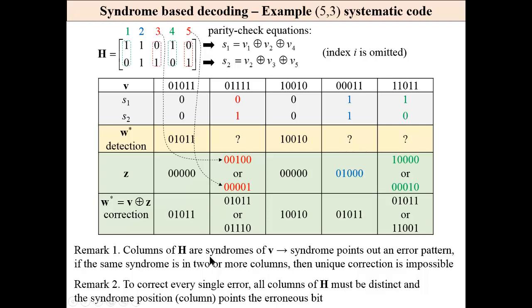Columns of matrix H are syndromes of v. And syndrome points out an error pattern. If the same syndrome is in two or more columns, then the unique correction is impossible, like in these cases that we have here, one and two. To correct every single error, obviously, all columns must be distinct. All columns of matrix H, not like here.